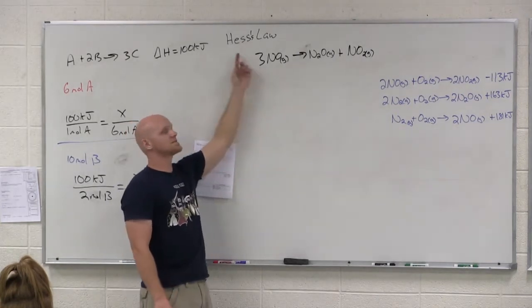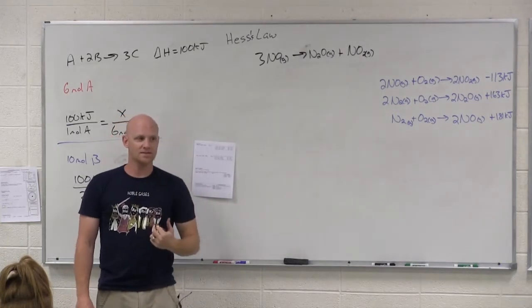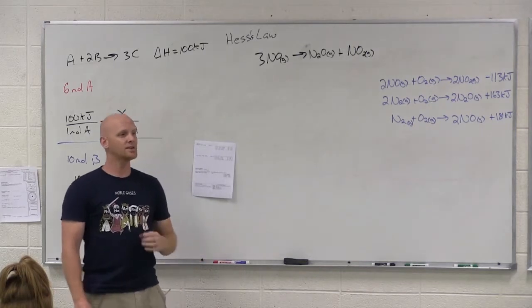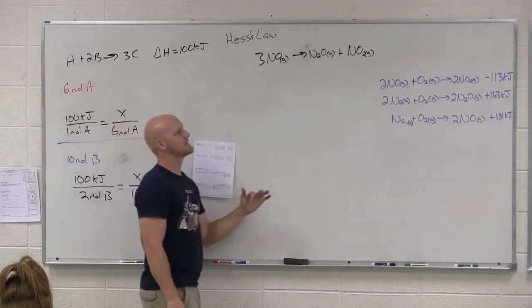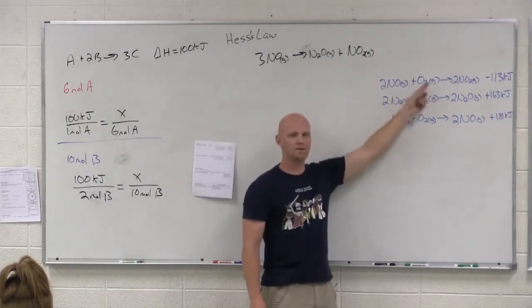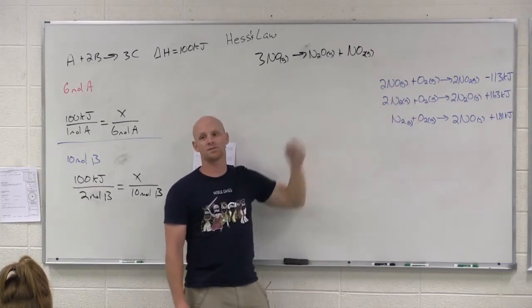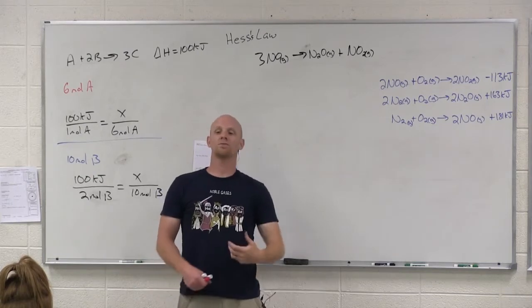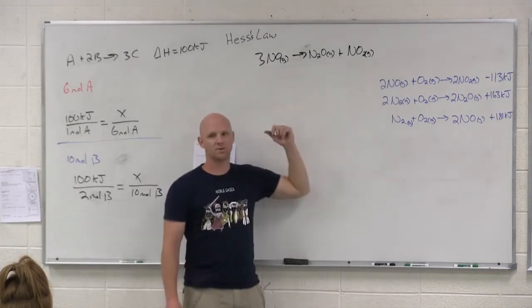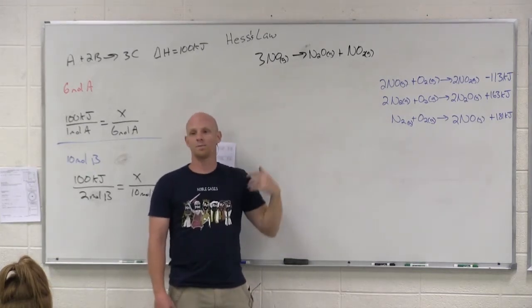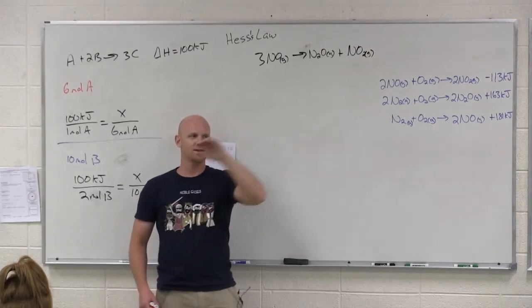The whole idea behind Hess's Law is that delta H is a state function. Hess's Law is used to calculate delta H, and it just says that if you've got some lovely chemical reactions over here, if you can add them up in such a way that it adds up to exactly this. That might not be the actual pathway that this reaction takes, but do I care about pathway for delta H? Nope. It's a state function. It only depends on the initial state and the final state.